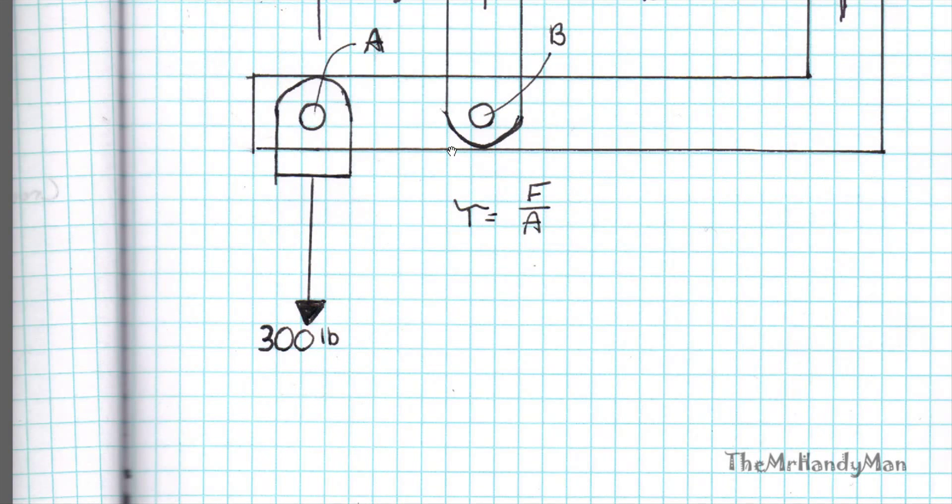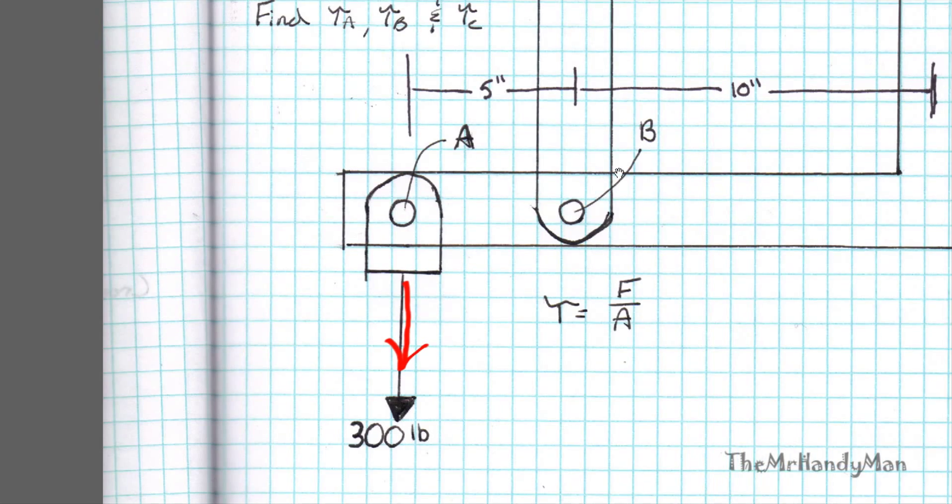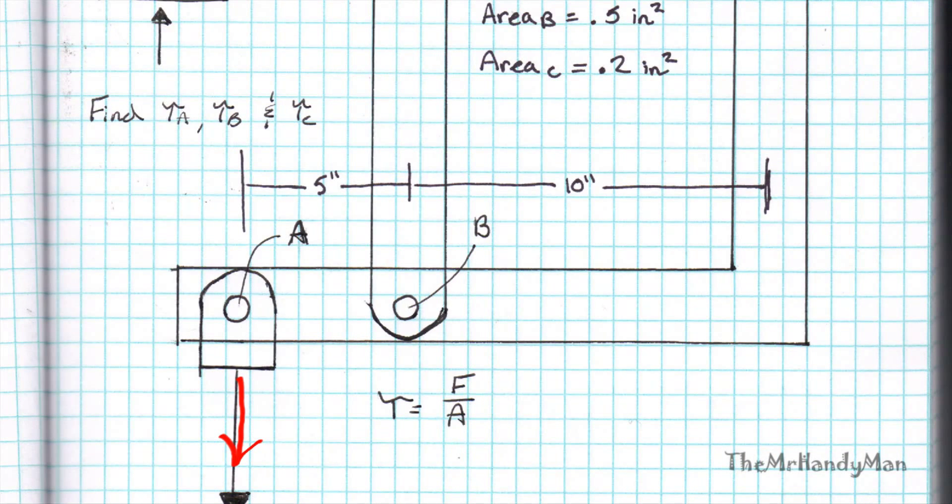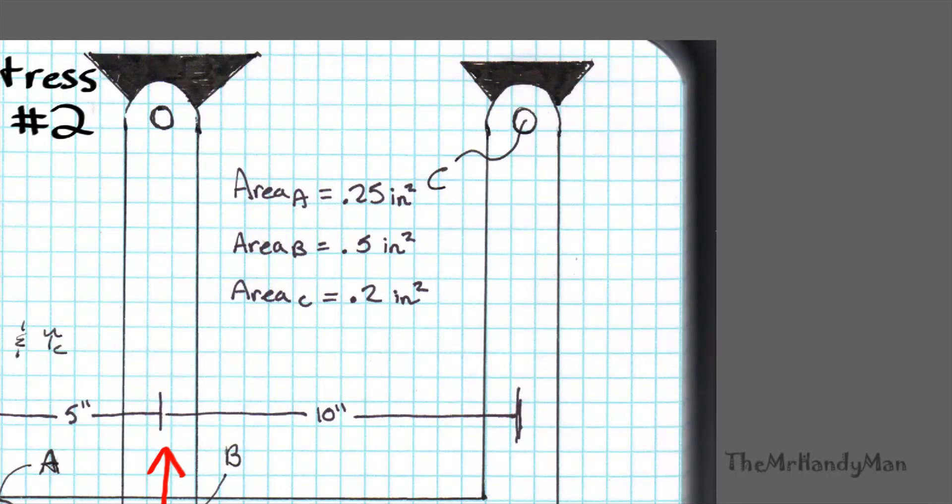Let's just look first at where our forces are, just like we would in statics. We have our force here of 300 pounds. Then we have our two reaction forces. One right here. I'm just going to assume this is just a vertical force, assuming that this linkage is at 90 degrees. And this one is also going to have a vertical and then also a horizontal component.